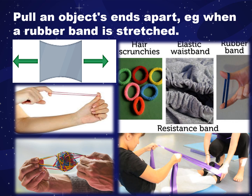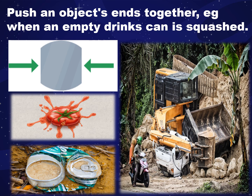When the force is removed, the rubber band goes back to its original shape. A metal drinks can undergoes inelastic deformation when it is squashed — just like the car. You can also push an object's ends together. When an empty drinks can is squashed, the object is deformed — just like the tomato and the car. This can change the shape of an object when too much force is applied, deforming the objects.